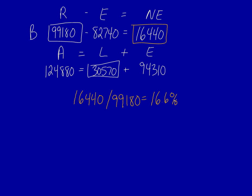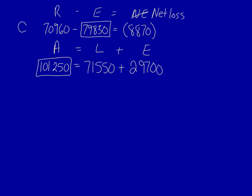Company C is a little bit different. They have a loss. We can still calculate their profit margin, 8,870 negative, divided by their revenues of 70,960, which is equal to a negative profit margin of 12.5%, which is very poor.